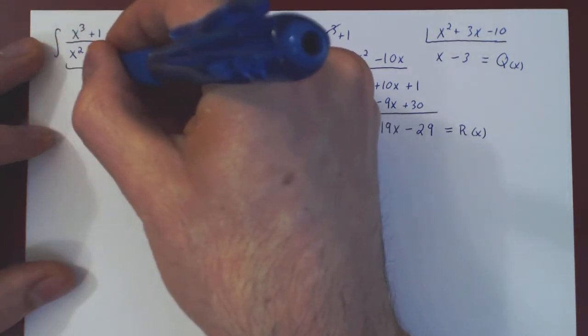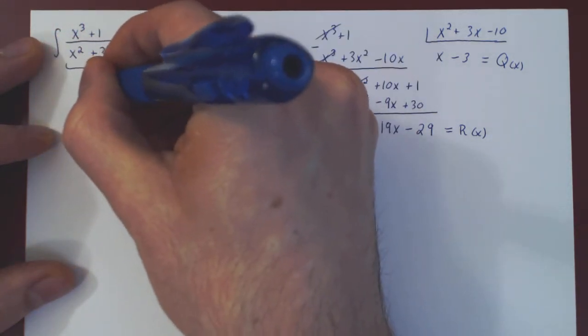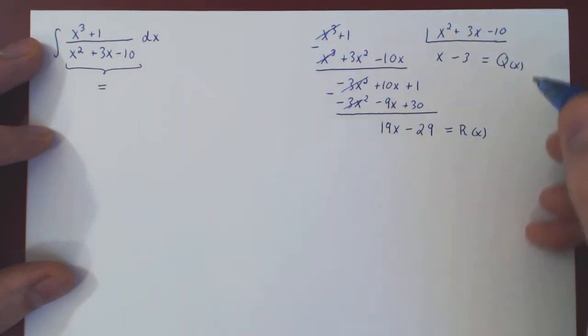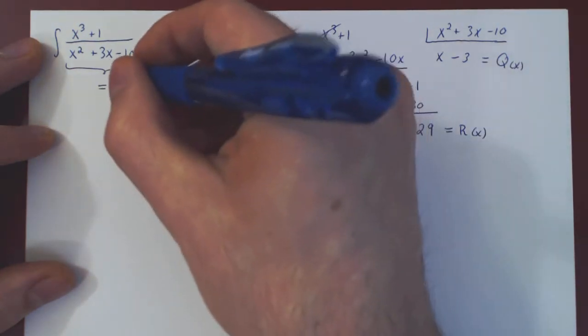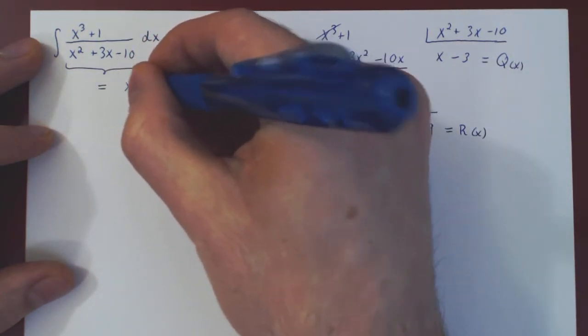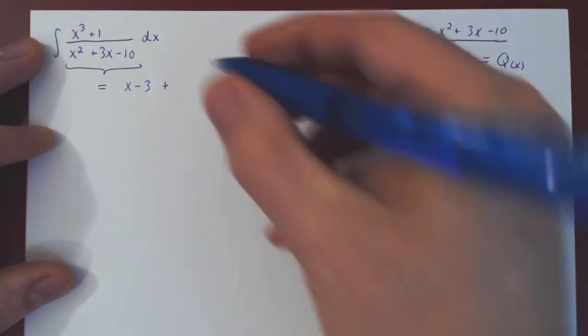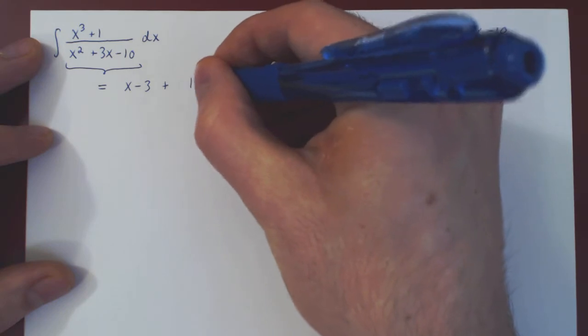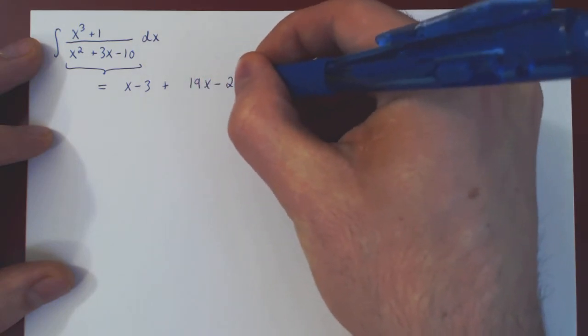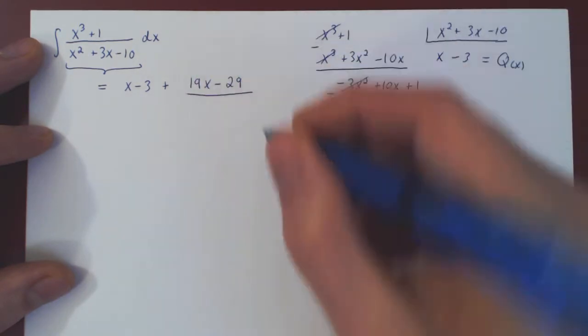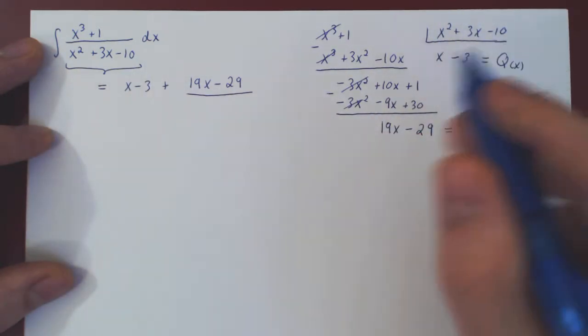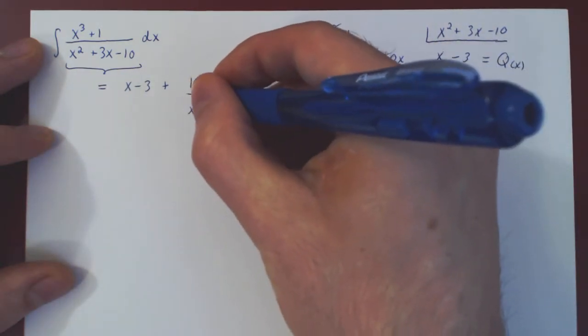So we know now that this rational function, as a result of long division, is equal to the quotient, x minus 3, plus the remainder, 19x minus 29, over the divisor, x squared plus 3x minus 10.